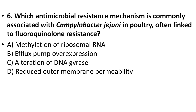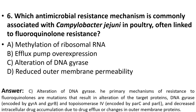Sixth question: Which antimicrobial resistance mechanism is commonly associated with Campylobacter jejuni in poultry, often linked to fluoroquinolone resistance? Options: A. methylation of ribosomal RNA, B. efflux pump overexpression, C. alteration of DNA gyrase, D. reduced outer membrane permeability. The answer is option C, alteration of DNA gyrase.